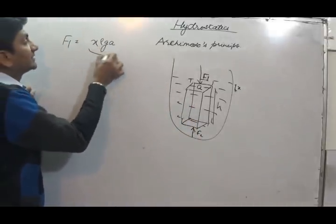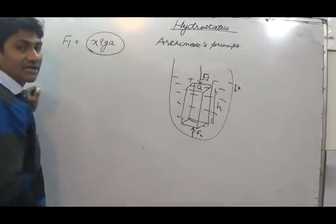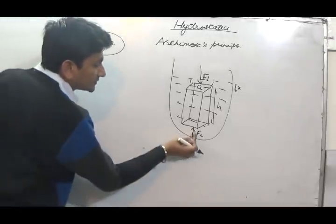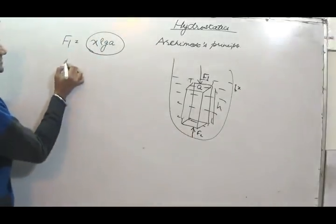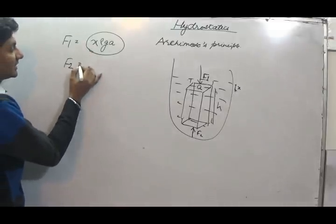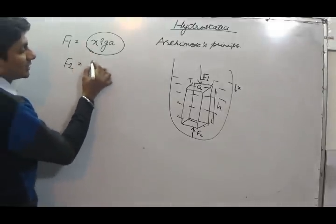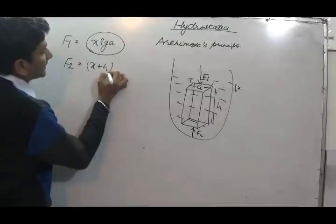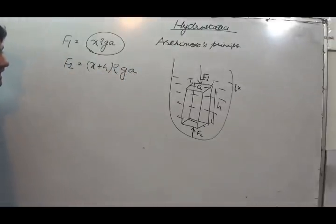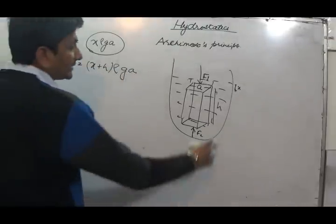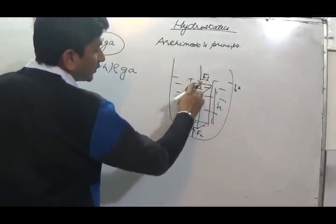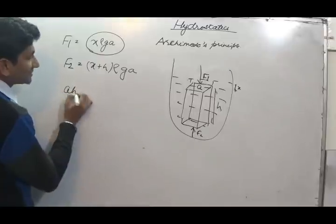So this will be the weight of water above it, and that weight will be the force exerted downwards. Now the force exerted from below, which is the buoyant force — the net buoyant force — so we have F2 minus F1. This will be equal to (X plus H) rho G A, and the volume of the body is A into H.